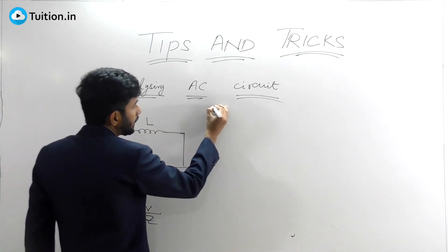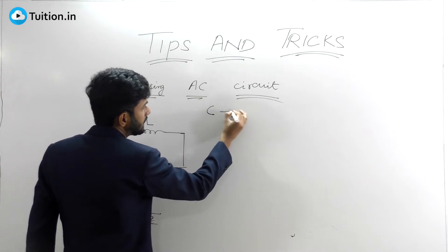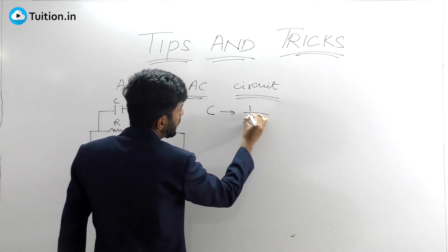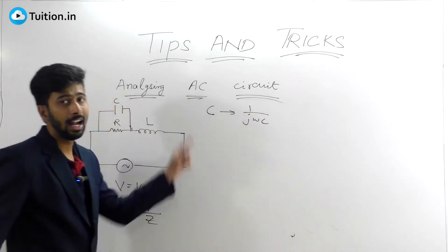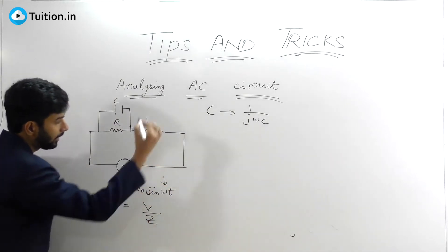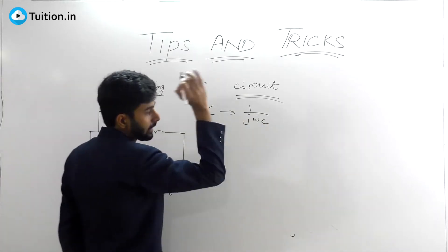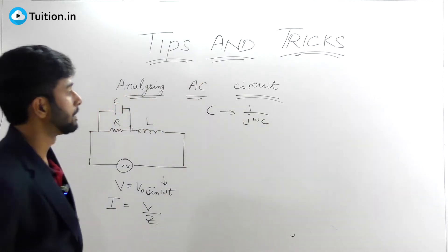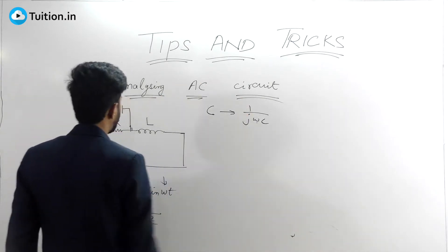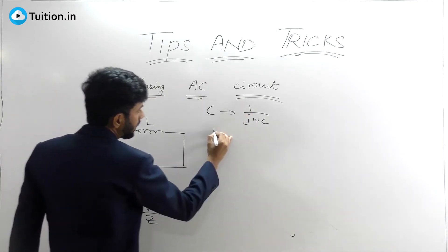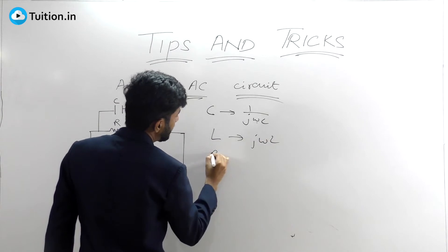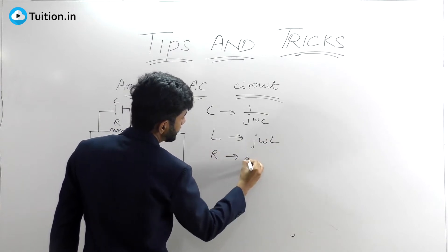Remember: replace your C with 1/jωC. I'll tell you what j is and what omega is. This omega used in the replacement should be the same omega throughout. Replace C with 1/jωC, replace L with jωL, and keep R as it is.